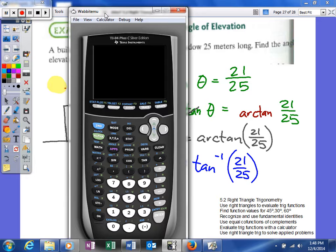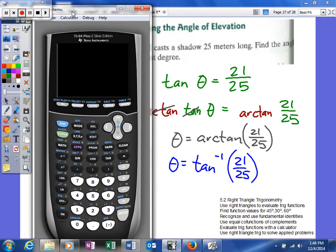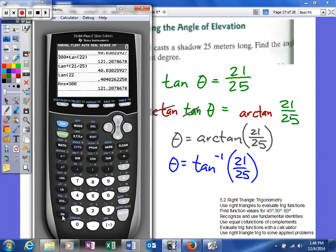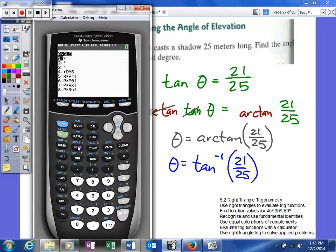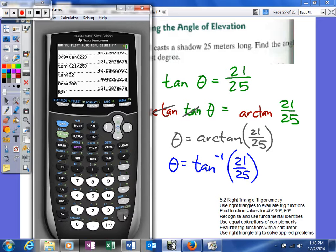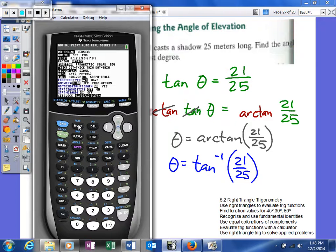Before, even if our calculator was in the wrong mode, we could type in 52 degrees and it would recognize it. But now that we're finding the angle, the mode matters. If your calculator is in radians, it gives the answer in radians. If it's in degrees, it gives degrees.